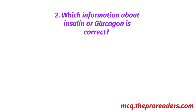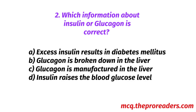Which information about insulin or glucagon is correct? A: Excess insulin results in diabetes mellitus. B: Glucagon is broken down in the liver. C: Glucagon is manufactured in the liver. D: Insulin raises the blood glucose level. Option B — glucagon is broken down in the liver — is the correct answer.